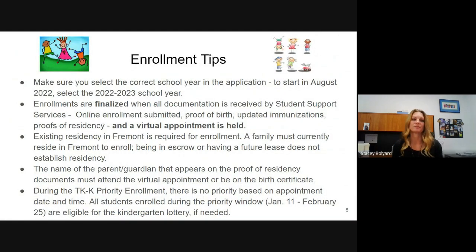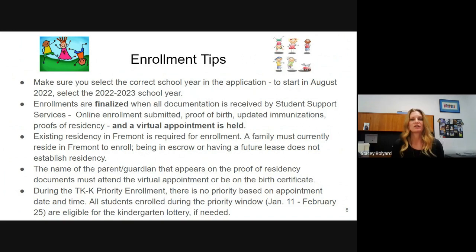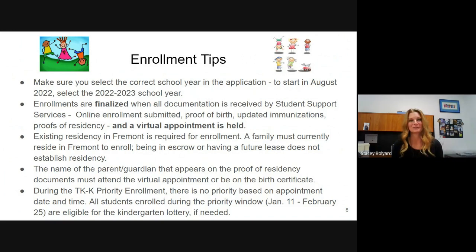Some final enrollment tips: when completing the application, make sure you select the correct year. The application will show two school years — the current year 2021-22 and next year 2022-23. Please select 2022-23 so your application goes into the appropriate queue. Likewise, when scheduling your virtual enrollment appointment, there are two appointment types — 2021-22 for current year only, and 2022-23 for next year students. Please select the 2022-23 school year so you reach the appropriate enrollment technician with no delay.